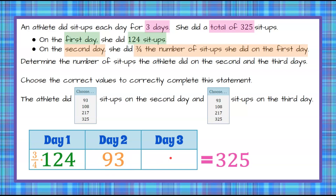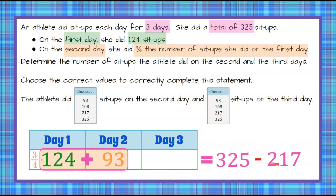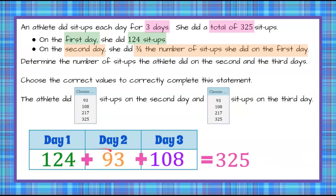Now we need to find out day three. We know we only have this one missing number and it totals 325, with no other information provided. So we're going to take our 124 and our 93, add them together — that gives 217 — and subtract that from 325. So 325 minus 217 is going to give you 108. We know that on day three we have 108. You can check this: 124 plus 93 plus 108 equals 325.